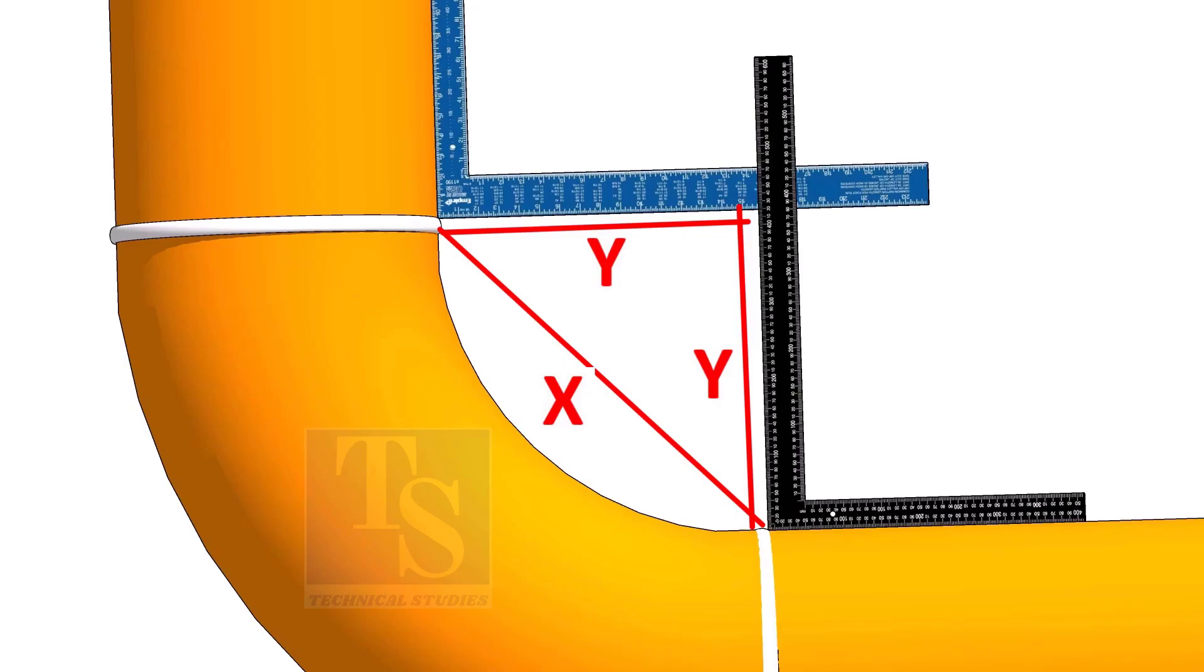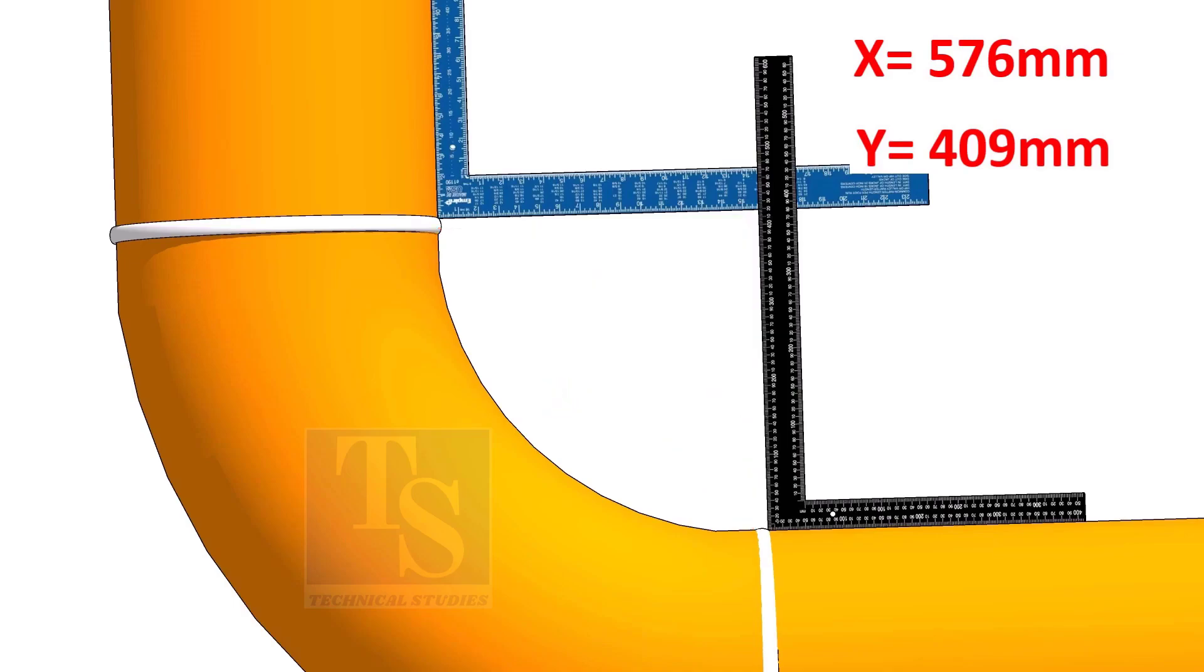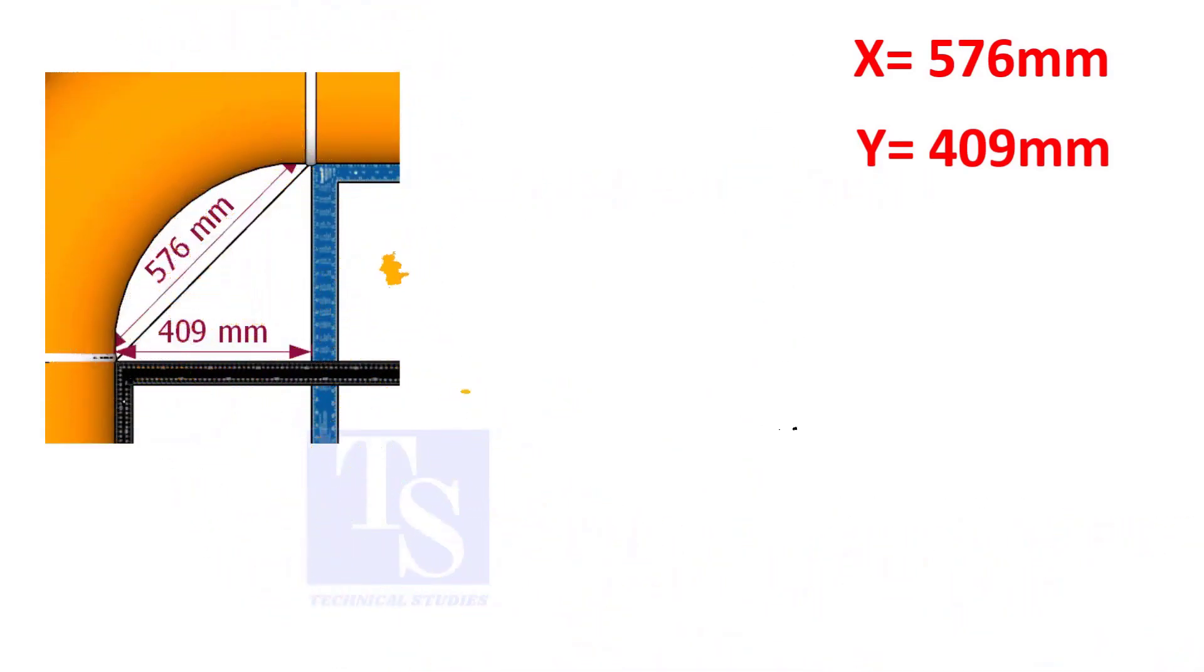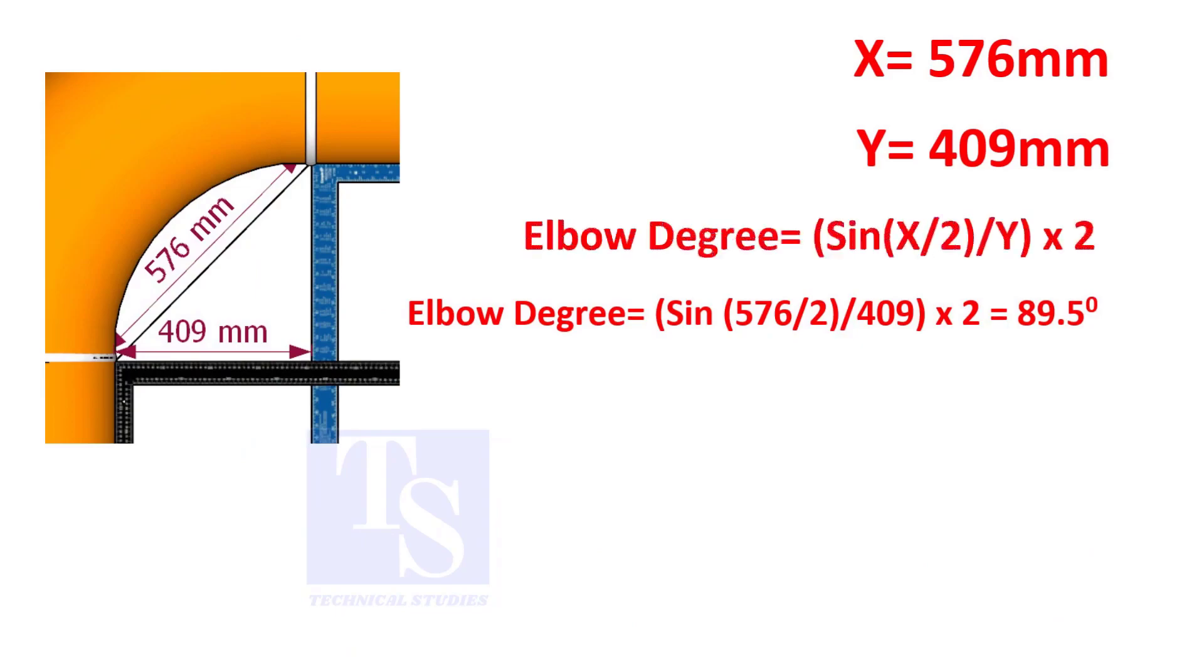Assume that the value of X is 576 and the value of Y is 409 millimeters. Apply the formula. The answer is 89.5 degrees.